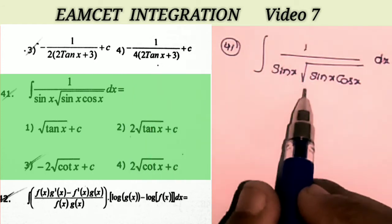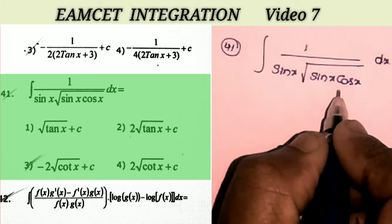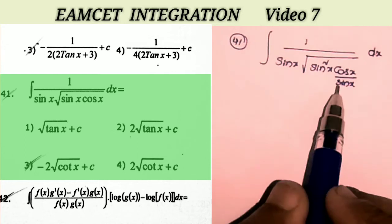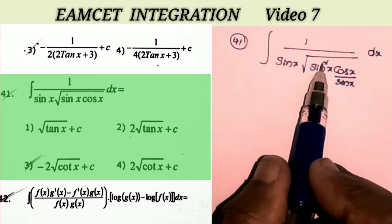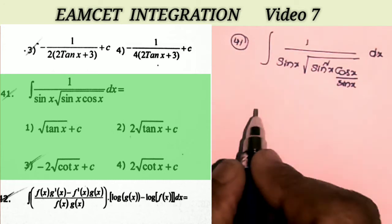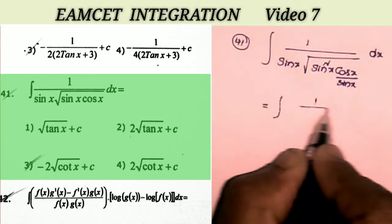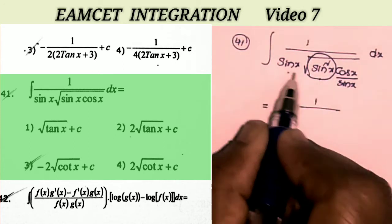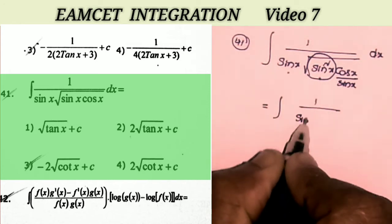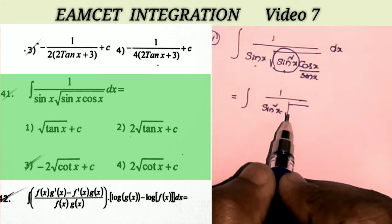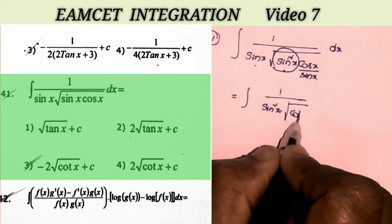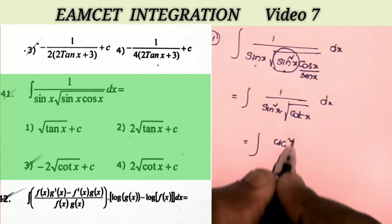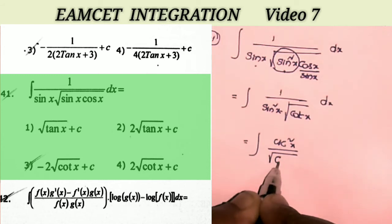Sum number 41: integral of 1 by sin x · √(sin x · cos x), dx. I multiply numerator and denominator by sin x · sin x. Then the denominator becomes sin² x · cos x / sin x. Now √(sin² x) = sin x, and sin x · sin x = sin² x. The remaining value under the root is cos x / sin x = cot x. And 1 / sin² x = cosec² x.